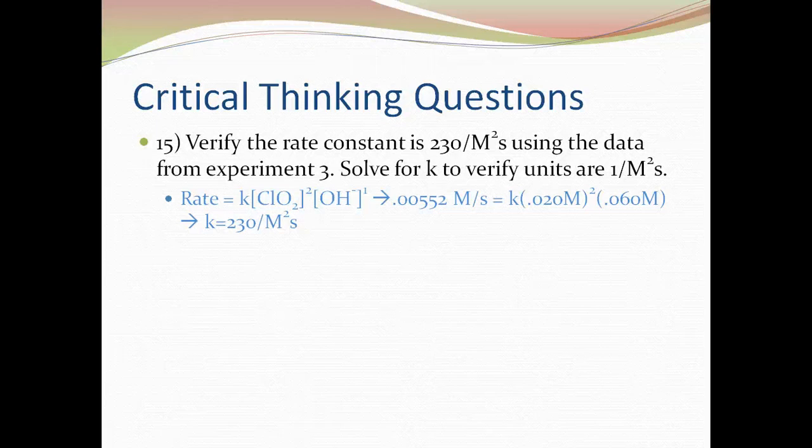So our rate law is rate equals k times the concentration of ClO2 squared times the concentration of OH- to the first power.